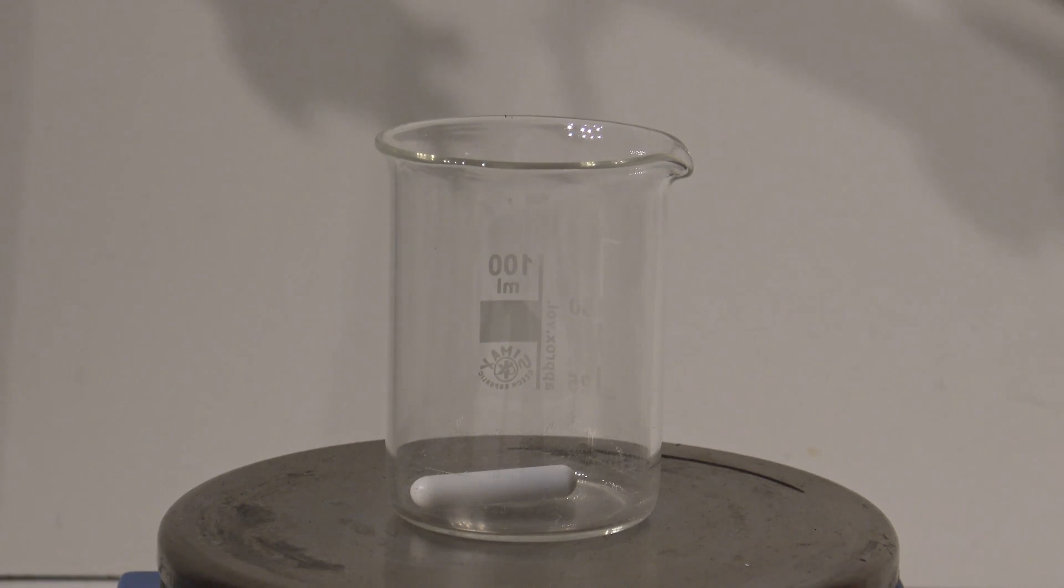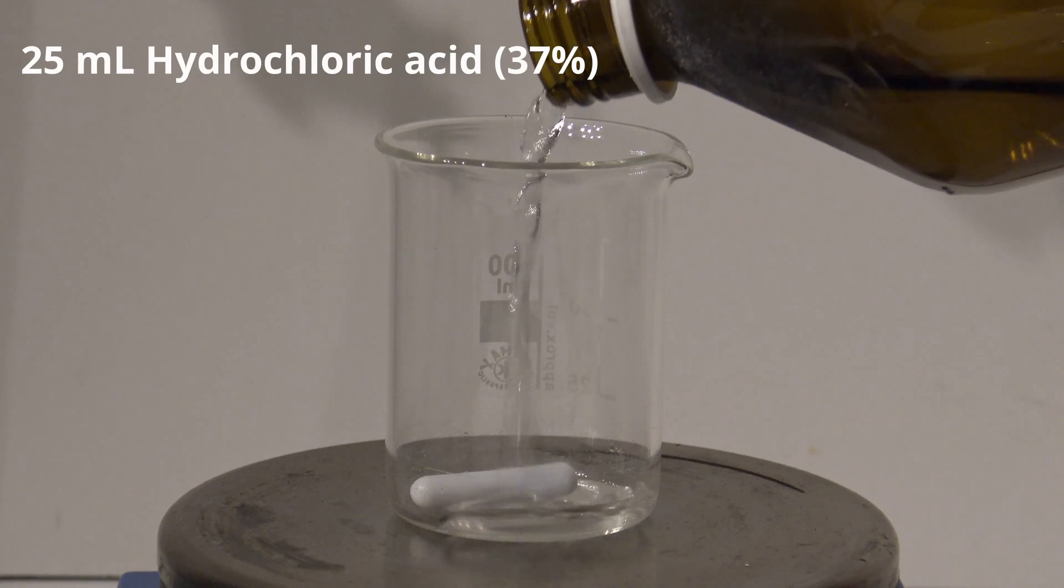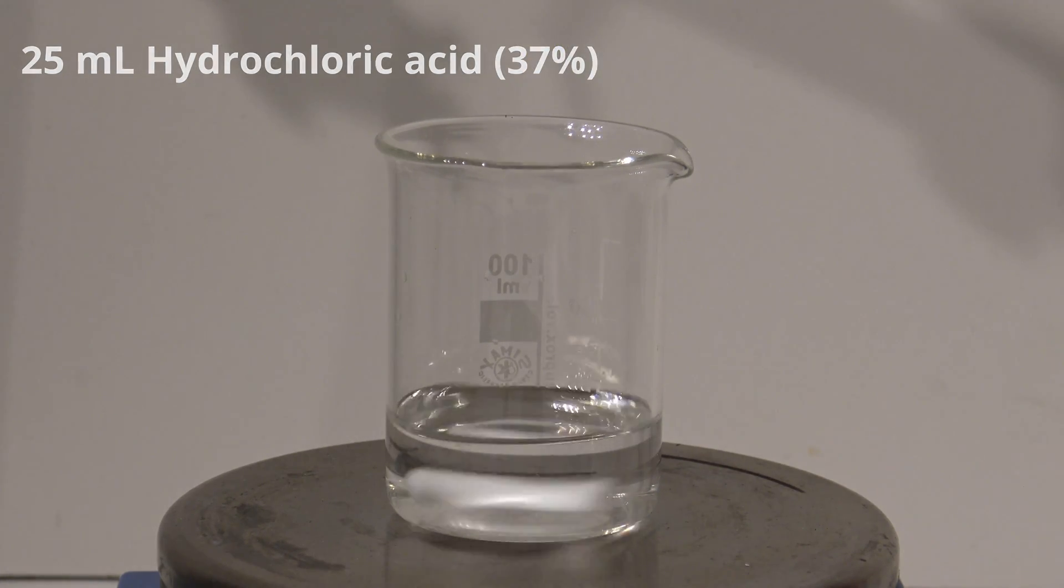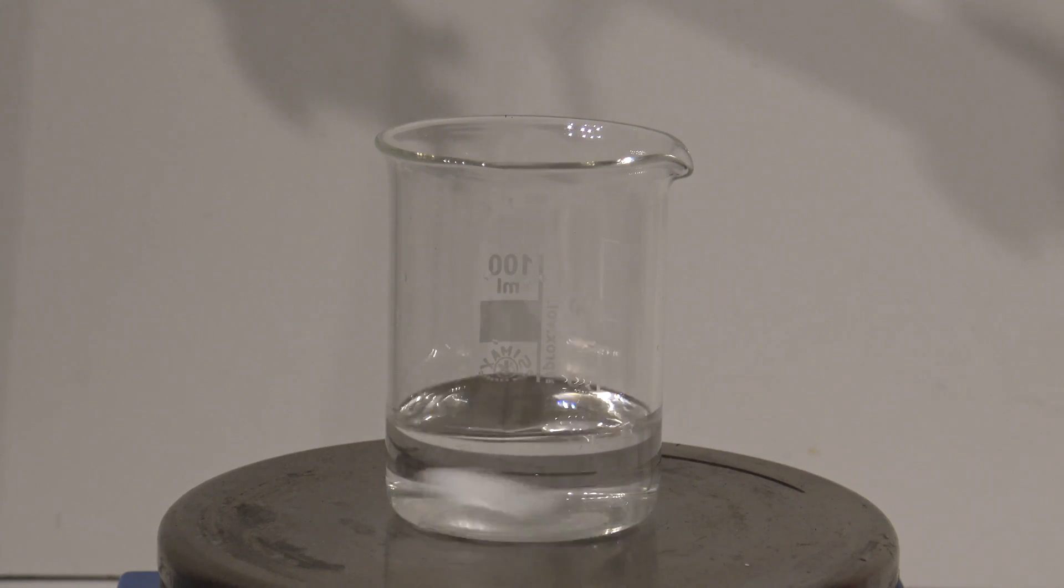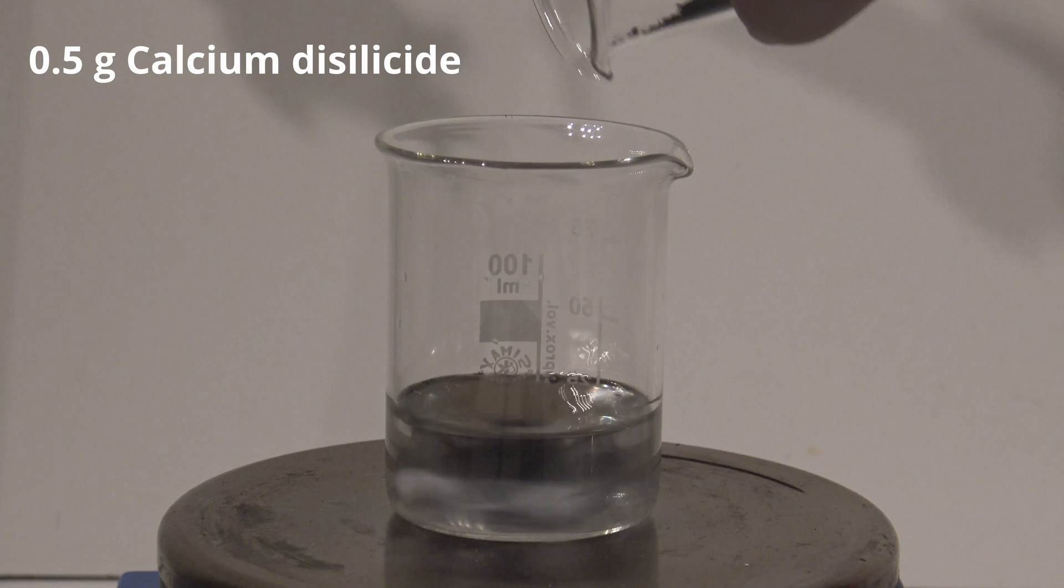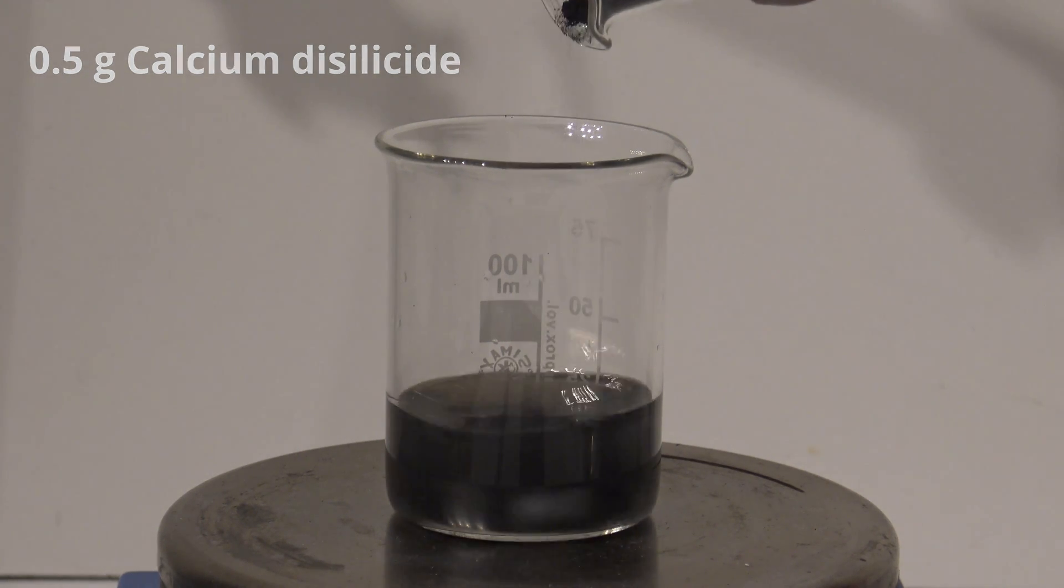An alternative to reacting calcium and silicon is using calcium disilicide in the beginning if available. Here the reaction is way more calm and way less heat is released. This leads to less hydrogen chloride being released in the reaction.